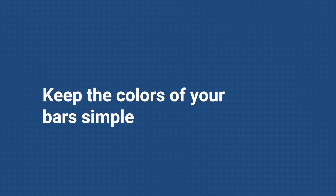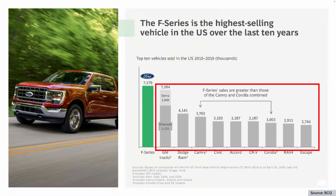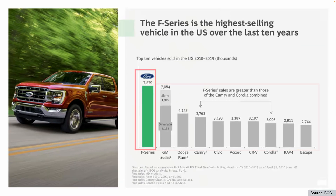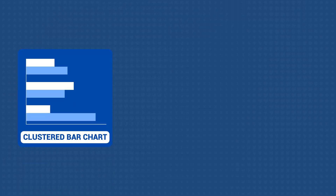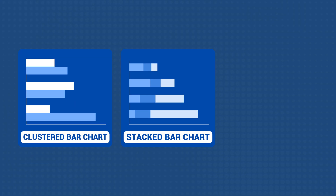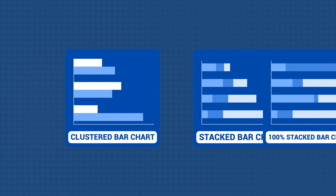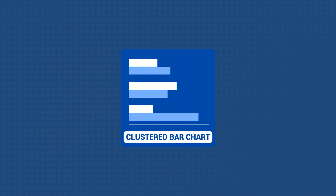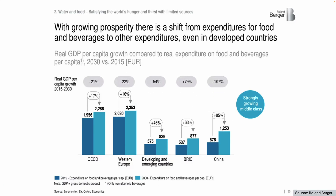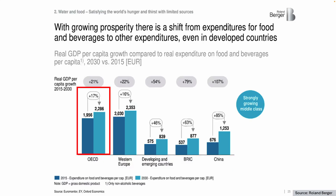Lastly, keep the colors of your bars simple. Best practice is to have them all the same color except for the bars that you're trying to focus on. For bar and column charts, you also have different variations like clustered, stacked, and 100% stacked. A clustered chart allows you to compare the subcategories against each other, like in this example where instead of comparing the regions against each other, it compares the years for each region.